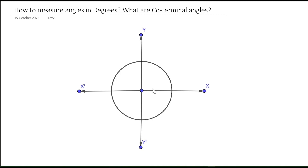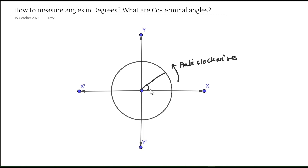Whenever we want to measure any angle, by convention we consider angles in the anti-clockwise direction — that is, the direction opposite to a clock. So if I start from the x-axis and measure some angle theta in the anti-clockwise direction, this angle is considered a positive angle. Since we are moving in the anti-clockwise direction, we call it a positive direction, so the angle is positive theta.